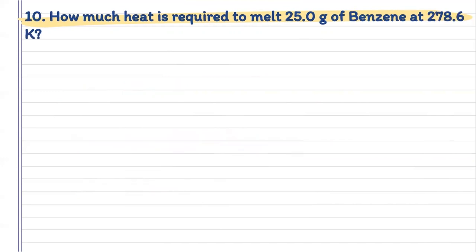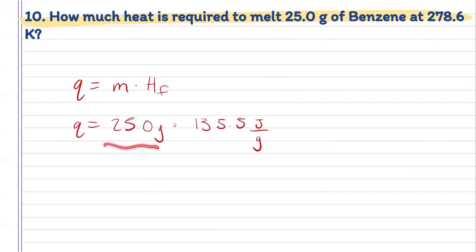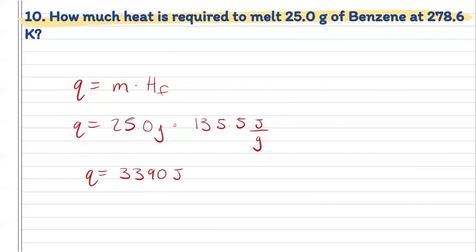For number 10, same idea. We want to find the heat required to melt 25.0 grams of benzene at 278.6 degrees Kelvin. Again, we're going to need our heat of fusion. Heat is equal to mass times heat of fusion. We know our mass, and my table lets me know that the heat of fusion of benzene is 135.5 joules per gram. Plugging those into my calculator, I get a heat of 3,390 joules.